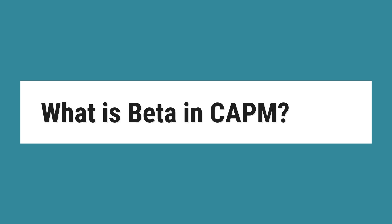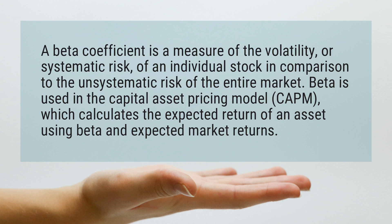What is beta in CAPM? A beta coefficient is a measure of the volatility, or systematic risk, of an individual stock in comparison to the unsystematic risk of the entire market.